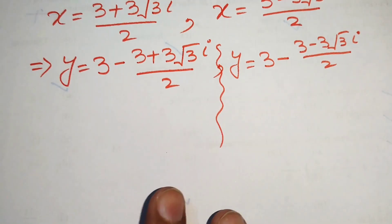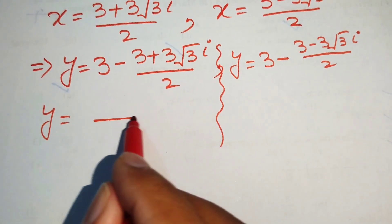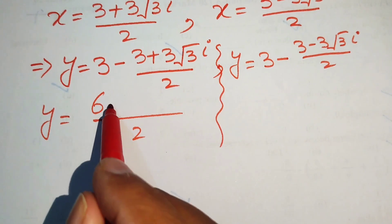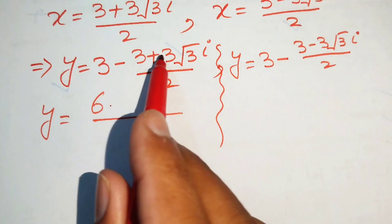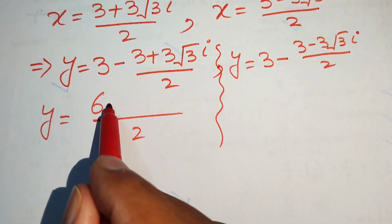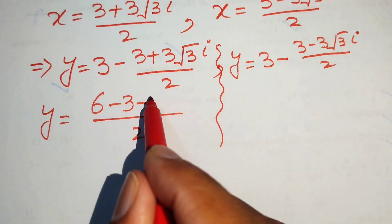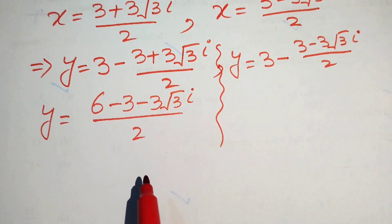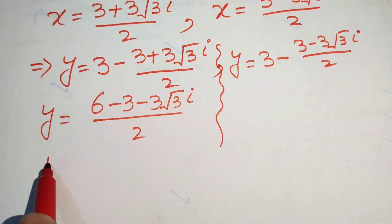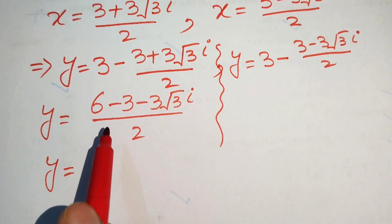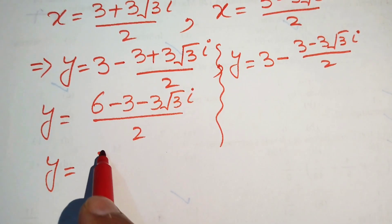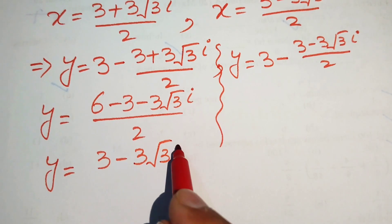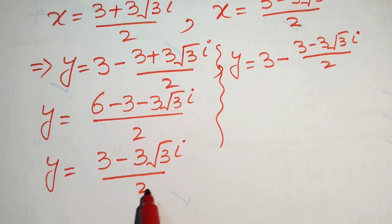For the first case, taking LCM of 2: 2 times 3 gives 6, and distributing the negative sign gives minus 3 minus 3 root 3 iota. So y equals (6 minus 3 minus 3 root 3 iota) divided by 2, which gives y equals (3 minus 3 root 3 iota) divided by 2.